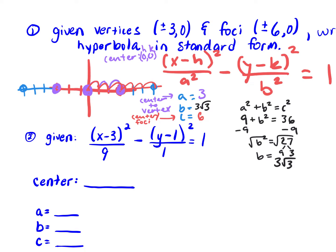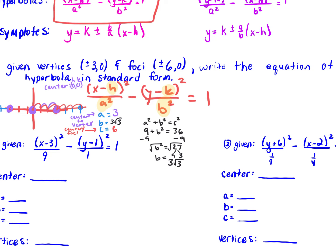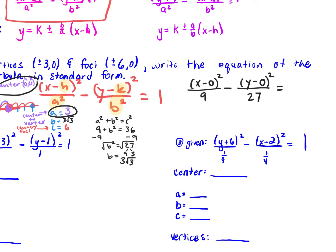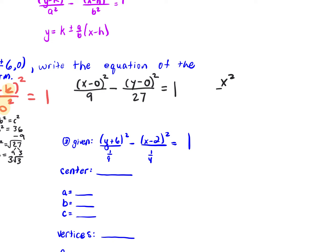Everybody with me so far? Once we have h, k, a, and b, we can plug it in. So we have x minus h — our h is 0 — squared over a squared, which is 9, minus y minus k — our k is 0 — squared over b squared, which is 27, equals 1. We can make this cleaner: x squared over 9 minus y squared over 27 equals 1.